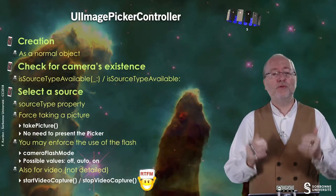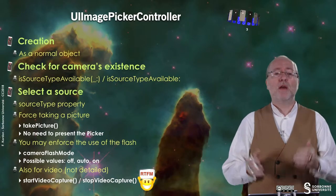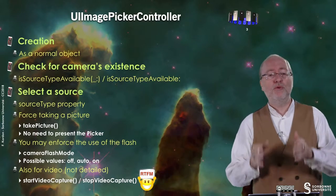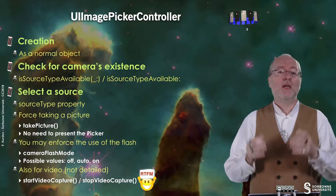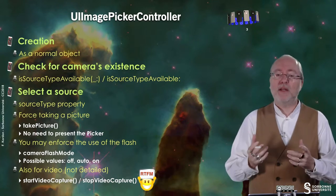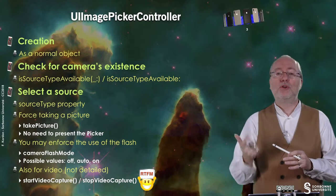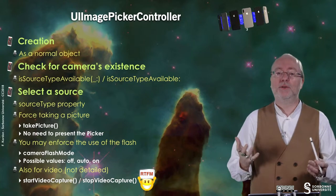You may enforce the use of the flash by assigning a value to the cameraFlashMode property. You have three values: off, auto, and on. Off means never using the flash, on means always using the flash, and auto decides depending on the available light when you take the picture.